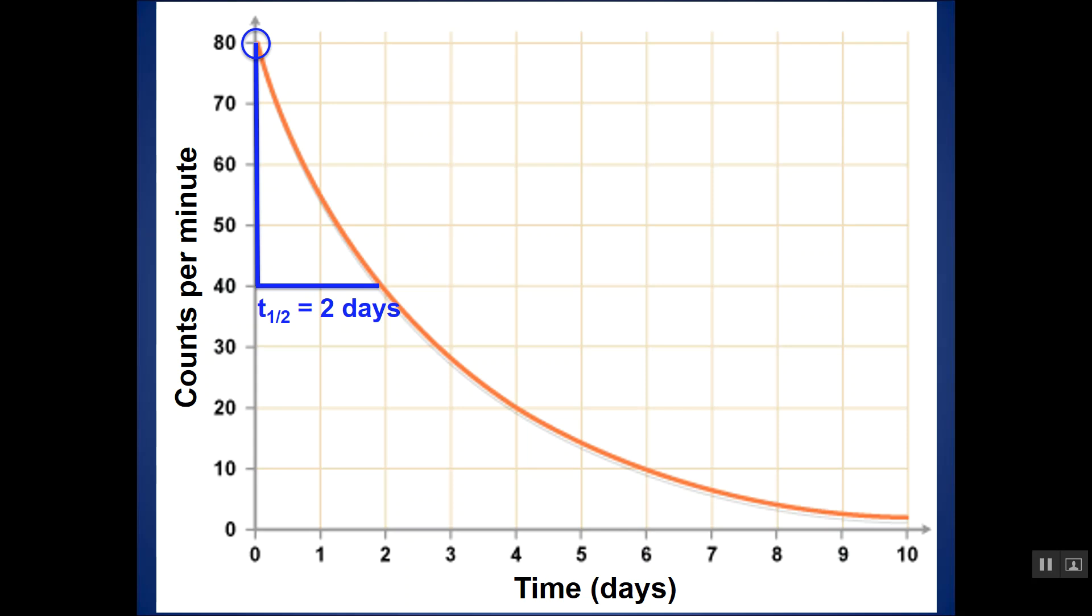And I can do that again at any point on my graph just to confirm—40 down to 20, which is half of it, and across still gives me 2 days. Just make sure you're picking a point on your actual best fit line, go down to half, which would be what's left after a half-life, and then go across. The length of that horizontal line is your half-life. If you have to show your work on the graph, this is what it should kind of look like.